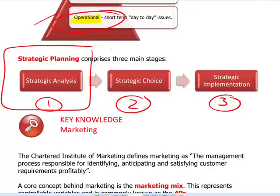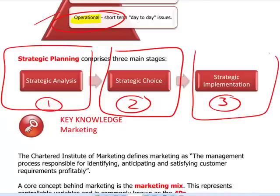We then have the choice stage — what are we going to do? What are our options? Do we launch new products? Do we enter new markets? And then we have the implementation stage — how do we implement our ideas? What change management models do we need?